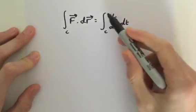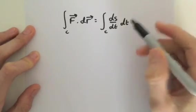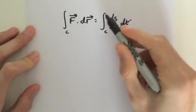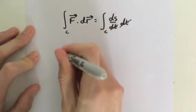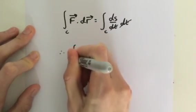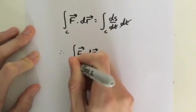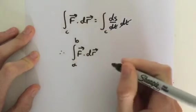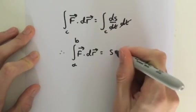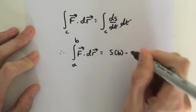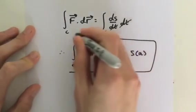So what is the integral of dS by dt with respect to dt? That is simply, well, the dt's cancel. The integral of dS is simply S. So therefore, the integral of F dot dr from our points A to B is going to equal S evaluated at B minus S evaluated at A. Now, that is the proof. Let me explain.